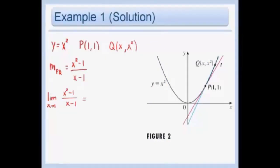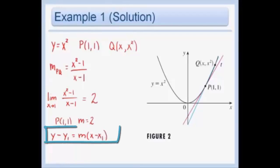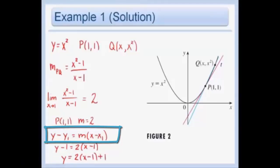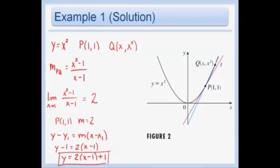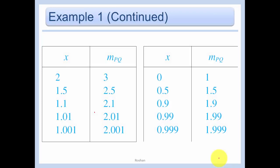Our slope is 2 and our point is (1, 1), so we can find the equation of the line using point-slope form. Please write it down: y minus y₁ equals the slope times (x minus x₁) — we're going to use it a lot this year. So we have y minus 1 equals 2 times (x minus 1), which gives us y equals 2(x minus 1) plus 1, and we can leave it just like that.